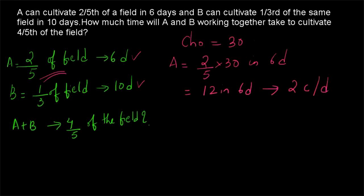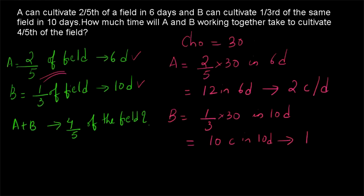This is the only difference compared to other problems — we are not directly dividing thirty by six. Instead, we first find two-fifths of the total chocolates since A is only cultivating two-fifths of the field in six days. Similarly, for B: B is having one-third of thirty chocolates in ten days, which is ten chocolates in ten days — so B is having one chocolate per day. Therefore, A and B together are having three chocolates per day.